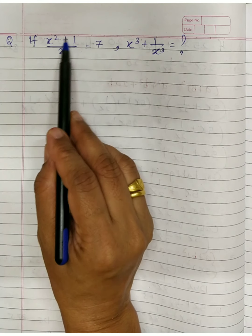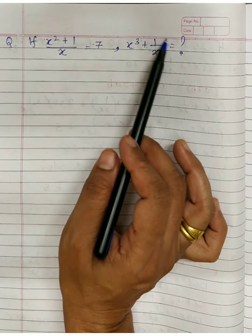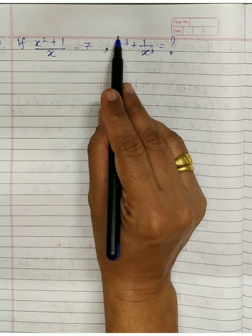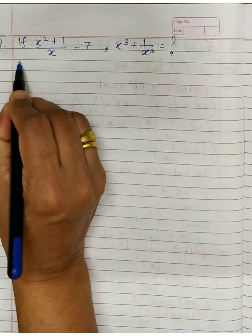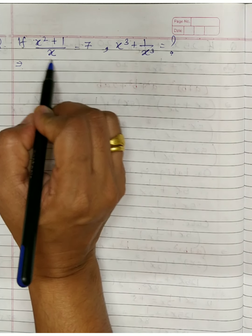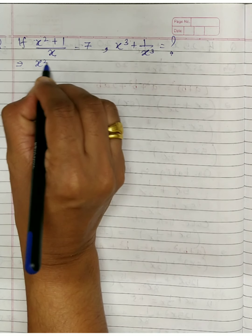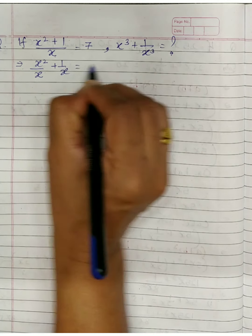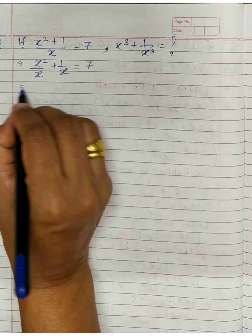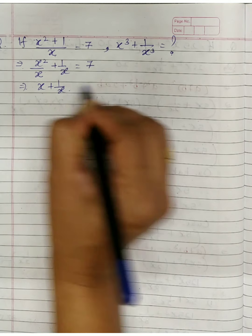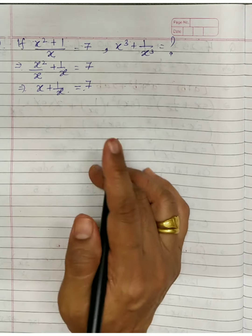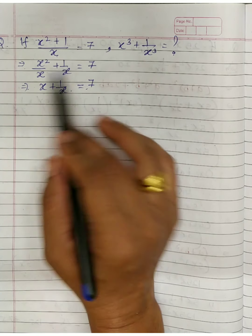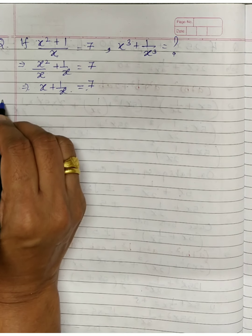Next question: x² + 1/x = 7, find x³ + 1/x³. The hint is: to find x³ + 1/x³, we need x + 1/x. Separate x² + 1/x as x²/x + 1/x = x + 1/x = 7. Then cube both sides to get the answer.